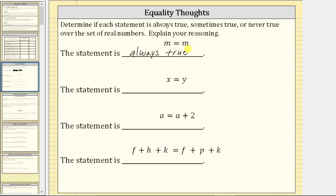And again, we are asked to explain our reasoning. Whatever value m represents, it will always be equal to itself.